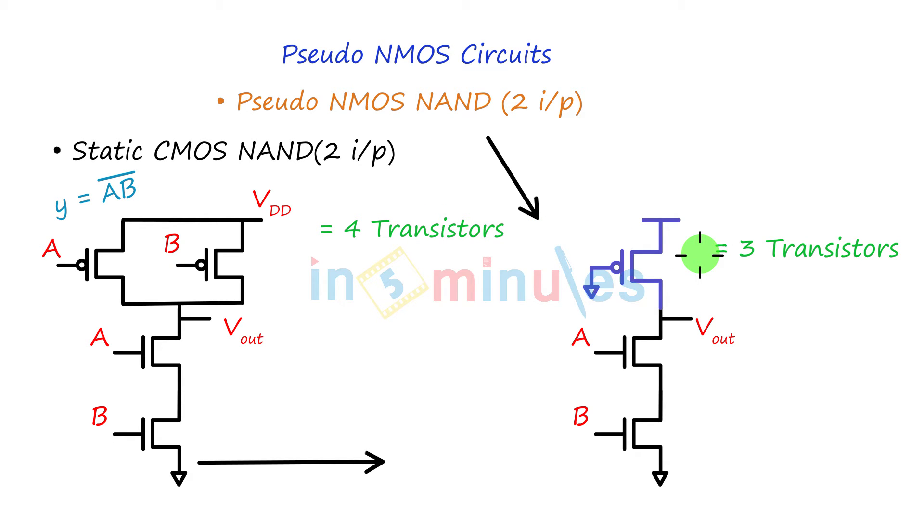If I had say, five input NAND, then how many? Five for your pulldown, five for your pullup. So total of 10. Here it would be five for your pulldown and one for your pullup, so total is six. So this is for N input. For static CMOS it would be N plus N. Here it's always going to be N plus 1.